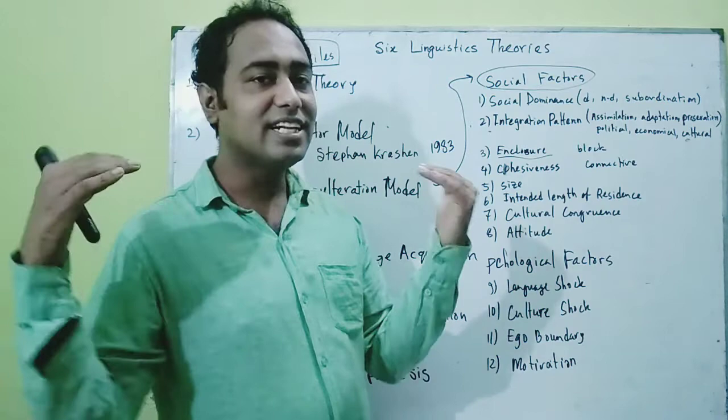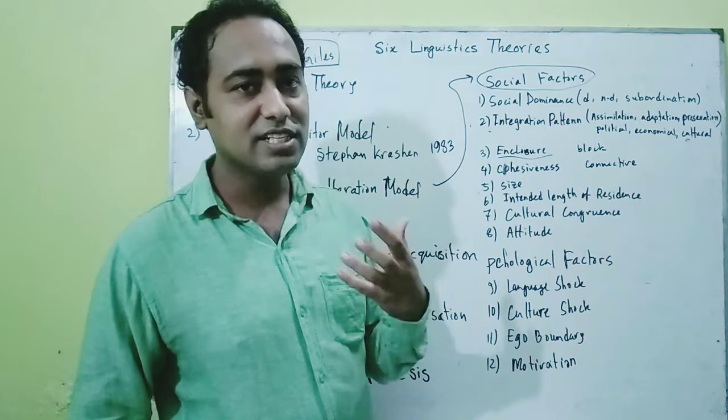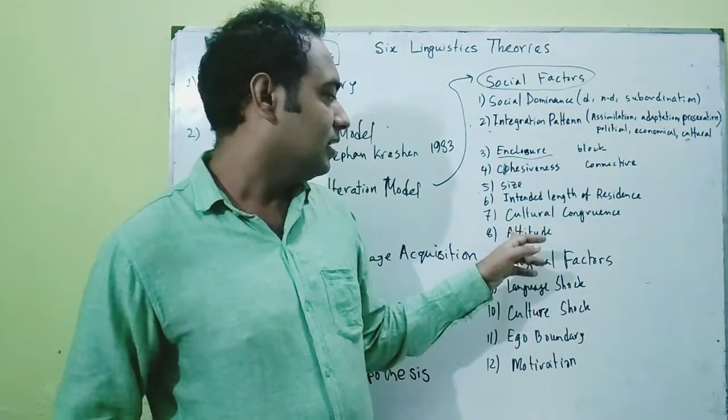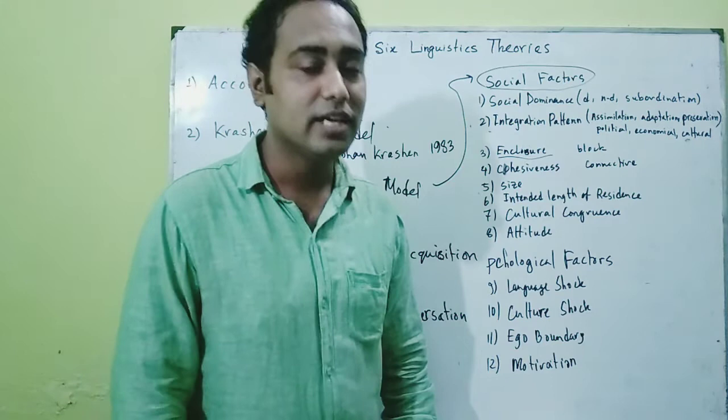The seventh factor is cultural congruence — when there is cultural similarity. For example, if I go from Bangladesh to Saudi Arabia, there will be cultural similarity and my learning of Arabic will be much faster.